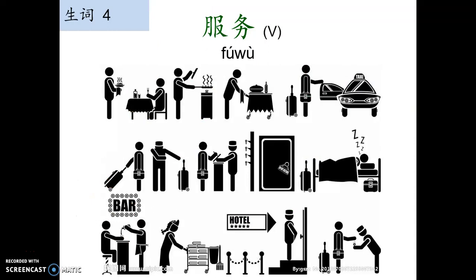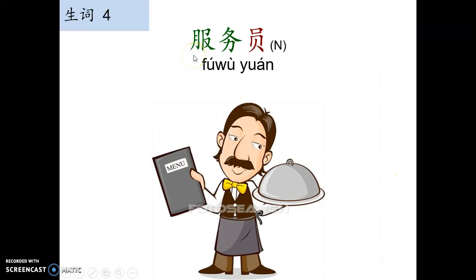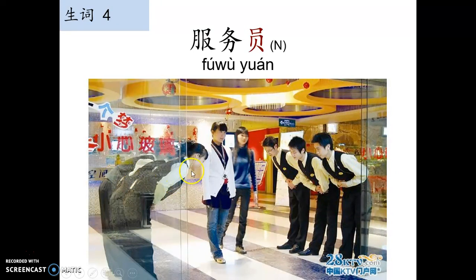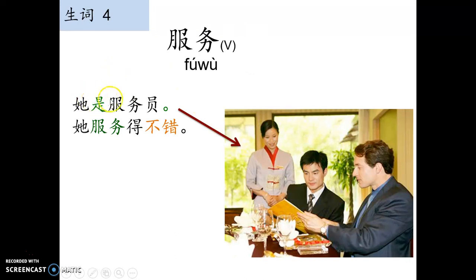好。生词：服务。服务 is a verb meaning 'serve'. 这些都是别人为你服务. The person who serves — we call them 服务员. 服务员 refers to the profession of server or waiter. 她们是服务员. 她服务得不错 means the service she provides is pretty good.